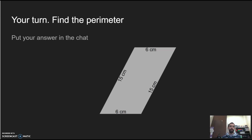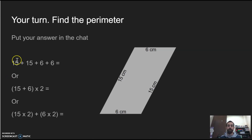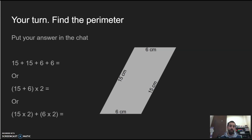Next we're going to look at the perimeter of the parallelogram. A parallelogram is very similar as far as the math, but this time the sides are not all the same size. Here are your options: you could add each side — 15 + 15 + 6 + 6; or do 15 + 6 and multiply that by 2; or do 15 × 2 plus 6 × 2. More than one way to get this done. If you said 42 centimeters, congratulations — you got it right.